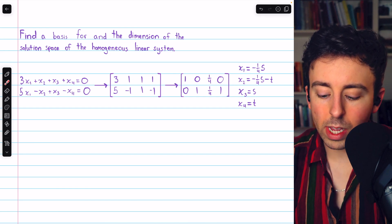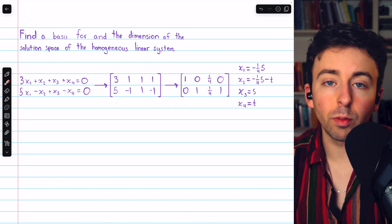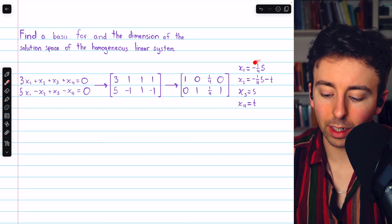From row 1, we have that x1 must equal negative one-fourth x3. But x3 equals s, so negative one-fourth s.